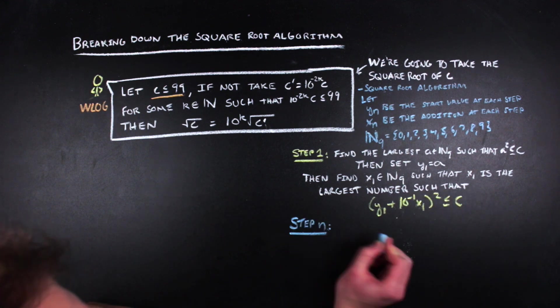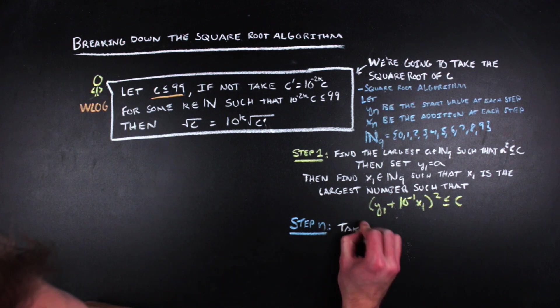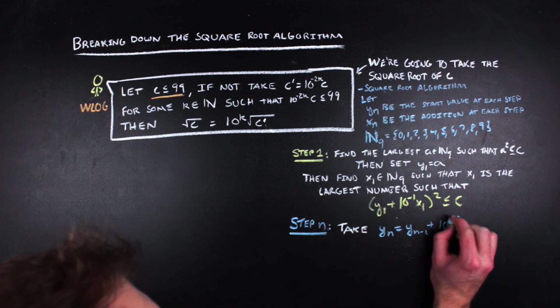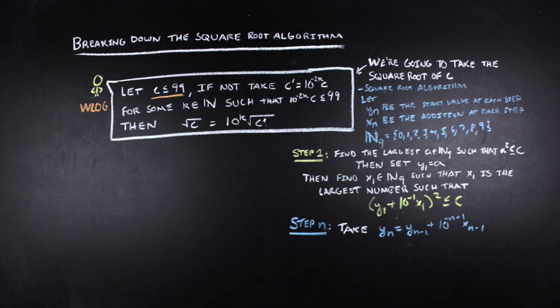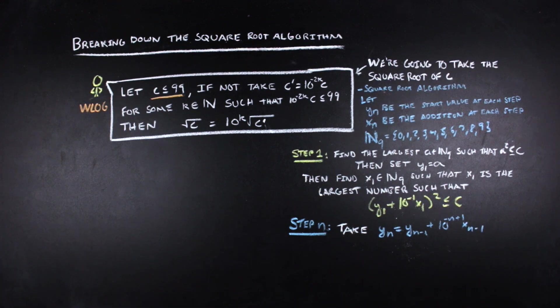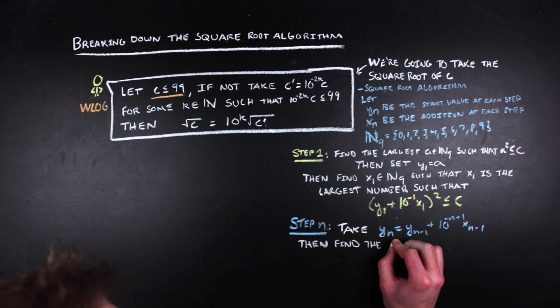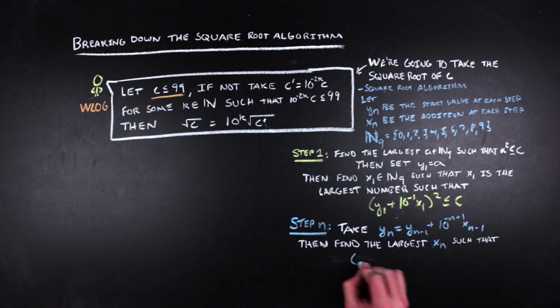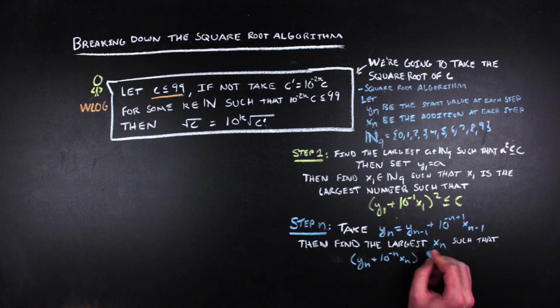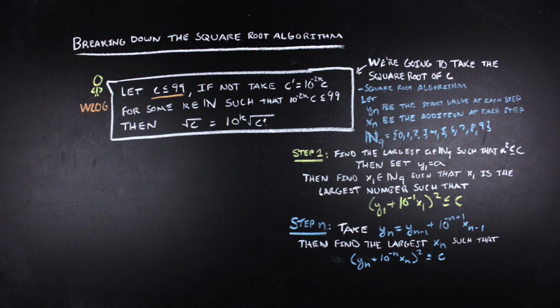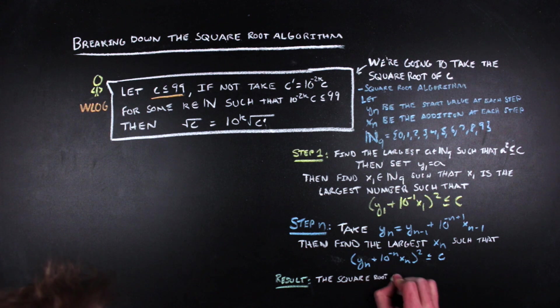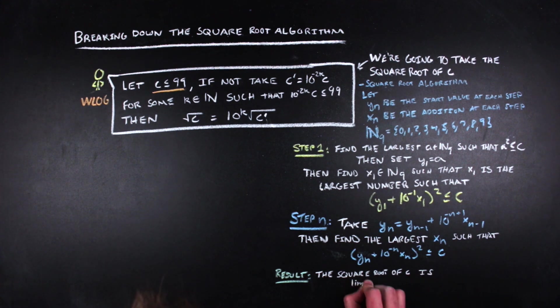Now for the rest of the steps, we will have y sub n equal to y sub n minus 1 plus 10 to the negative n plus 1 times x sub n minus 1, and x sub n will be the largest number in N sub 9 such that y sub n plus 10 to the negative n x sub n quantity squared is all less than our c. Having defined these two sequences, the y sub n sequence dependent on the x sub n sequence, the value of the square root is claimed to be the limit as n approaches infinity of the y sub n sequence.